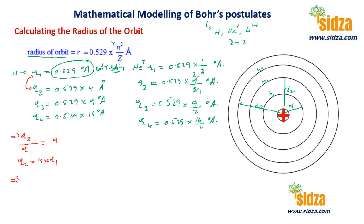Similarly, you can find the ratio of the third orbit to the second orbit for hydrogen. R3 to R2 for the hydrogen atom will be 9 by 4, which is 2.25. So the radius of the third orbit of hydrogen is 2.25 times the radius of the second orbit of hydrogen.